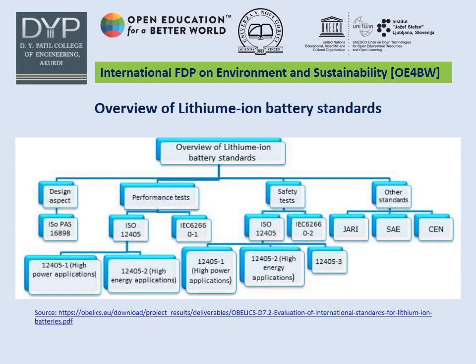ISO 12405 consists of the following parts under the general title 'Electrically Propelled Road Vehicles – Test Specification for Lithium-ion Traction Battery Packs and Systems.' Part 1: High Power Applications. This part specifies test procedures for lithium-ion battery packs and systems for electrically propelled road vehicles, enabling users to determine performance, reliability, and abuse characteristics, and compare test results across different battery packs or systems. Part 2: High Energy Applications — this part specifies tests for high-energy battery packs and systems.